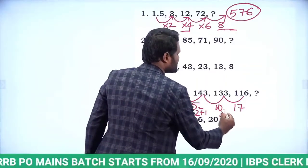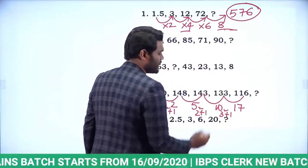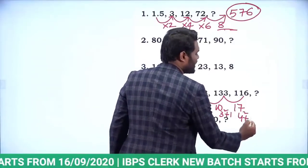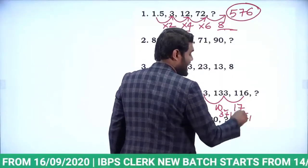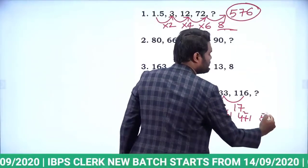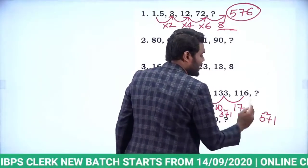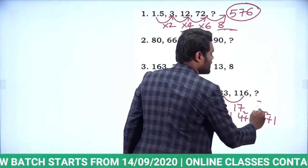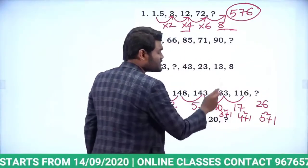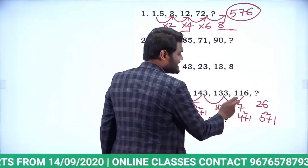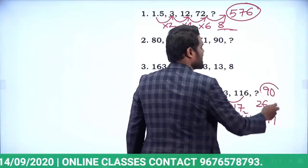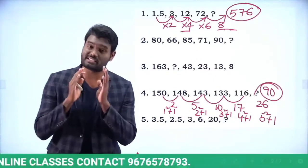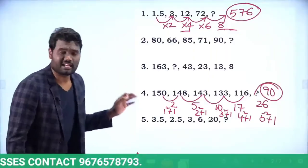Following the pattern, the next difference is 5²+1, which is 25+1 = 26. So 116 minus 26 gives the answer: 90.